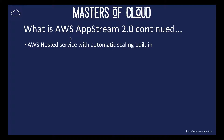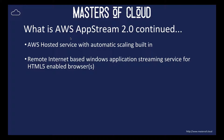AWS AppStream is a hosted service with automatic scaling built in. You have one user per instance, so you need to allocate the right amount of instances for the actual user load that you're going to have connecting. It's a remote internet-based Windows application streaming service for HTML5 enabled browsers. This is ultimately what AppStream 2.0 does — it's a simple alternative to things like Microsoft RDP or Citrix, ZenApp or ZenDesktop.